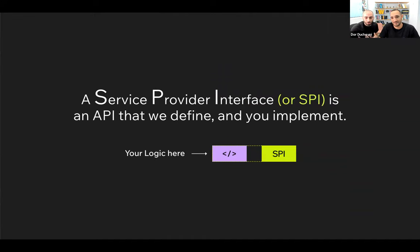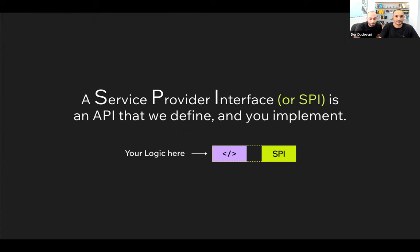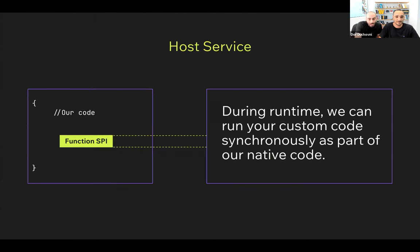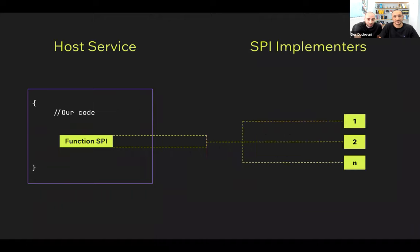Let's take a second to talk about the concept of an SPI. SPI is a service provider interface, which is basically an API that we define and you implement. With SPI, you don't call us — we will call you. During runtime, we will run your custom code alongside our native code.